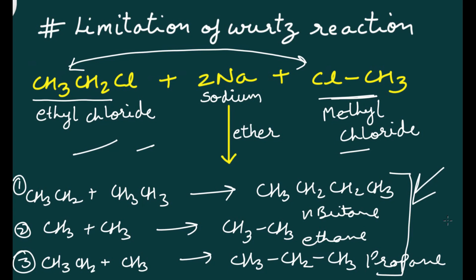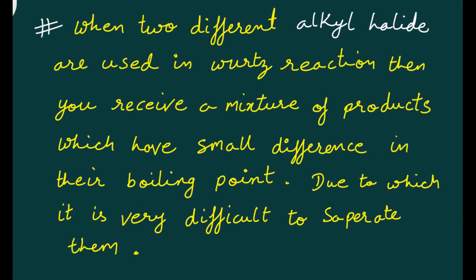Wurtz synthesis is only used for the formation of symmetrical alkanes. You can take any higher symmetrical alkane, but you need to take a single alkyl halide only. If two different types of alkyl halides are taken, you will definitely receive a mixture of products. When two different alkyl halides are used in Wurtz's reaction, you receive a mixture of products with small differences in boiling point, making them very difficult to separate. That's why we do not use different alkyl halides in Wurtz synthesis.